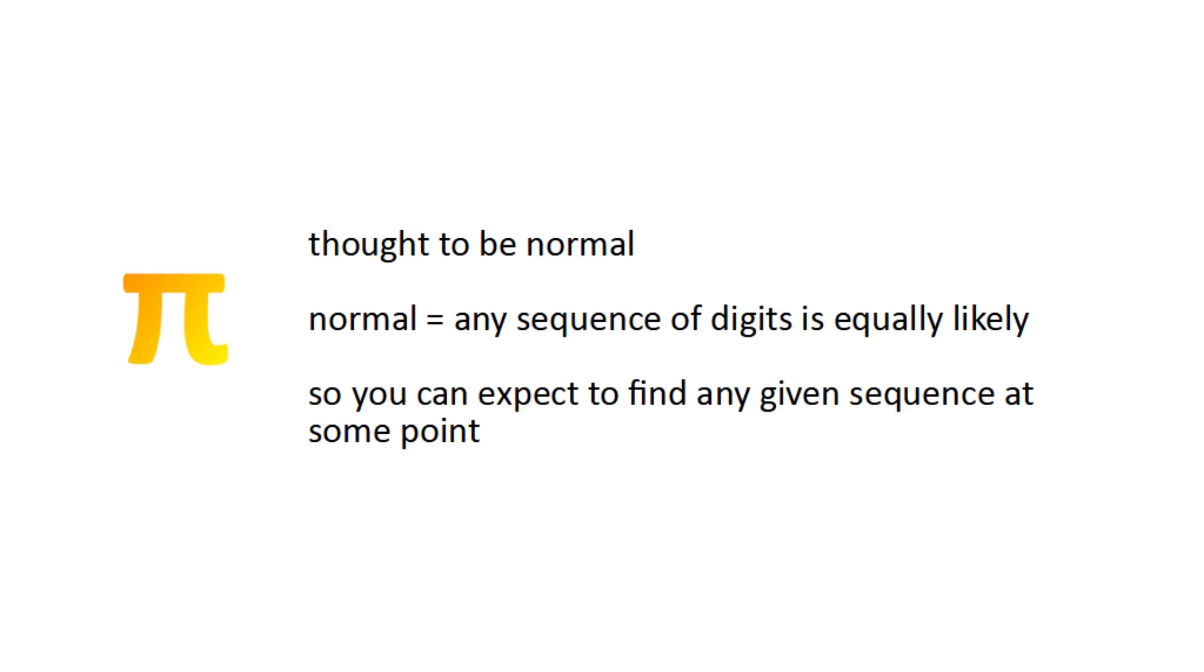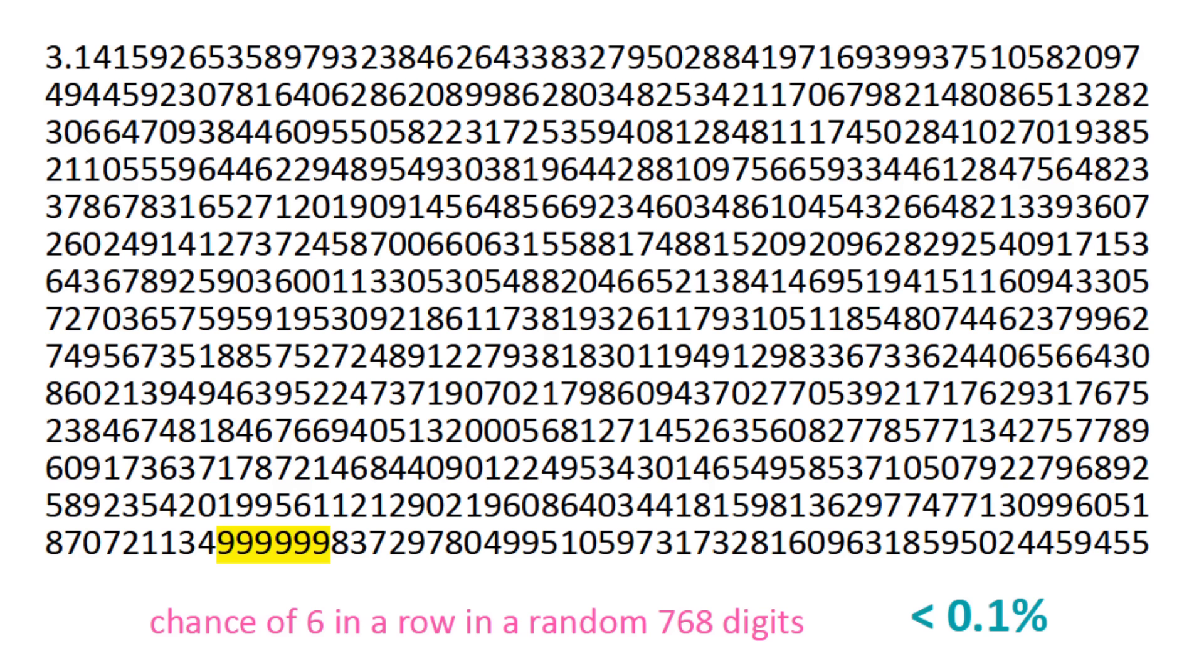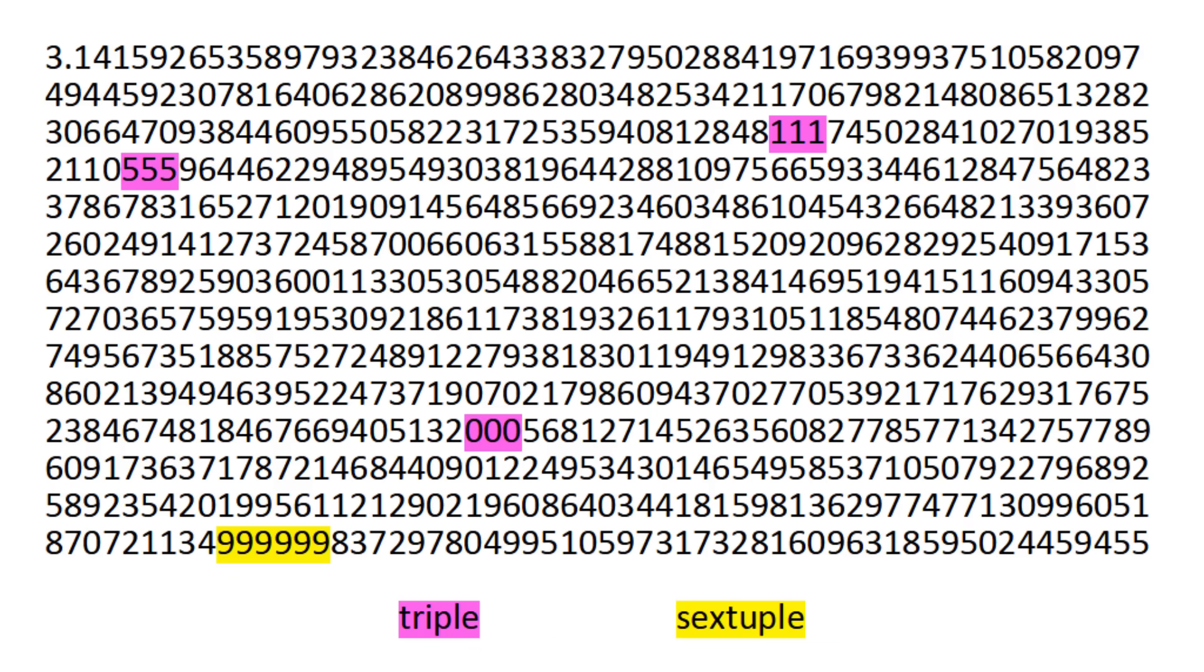Because in a randomly generated sequence, the chance of getting six of any digit in a row within the first 768 digits is less than 0.1%. Not only is this the first case of six digits in a row, it's also the first case of four and five digits in a row.